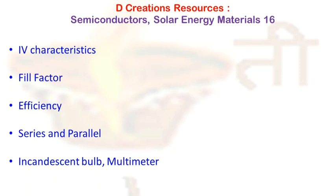The ratio of these two products corresponds to the fill factor. Graphically, fill factor is a measure of the squareness of the solar cell. If you imagine the area of the largest rectangle which will fit in the IV curve, that area represents the fill factor.